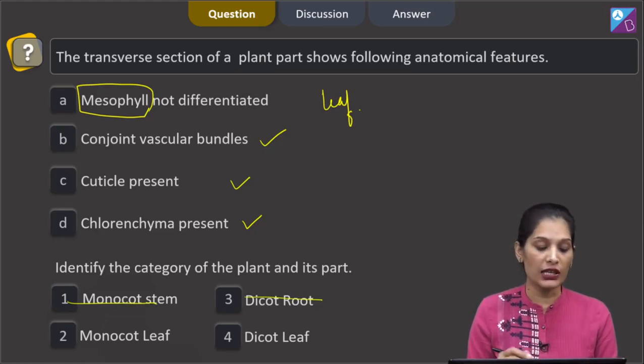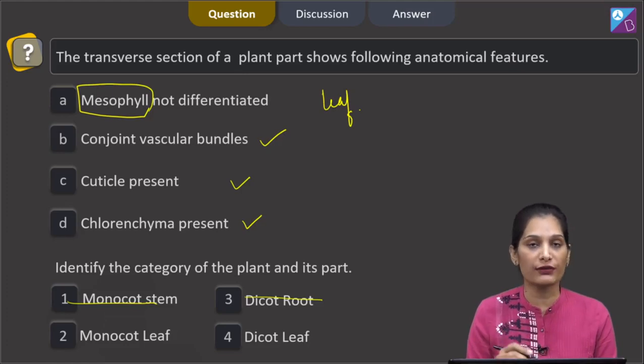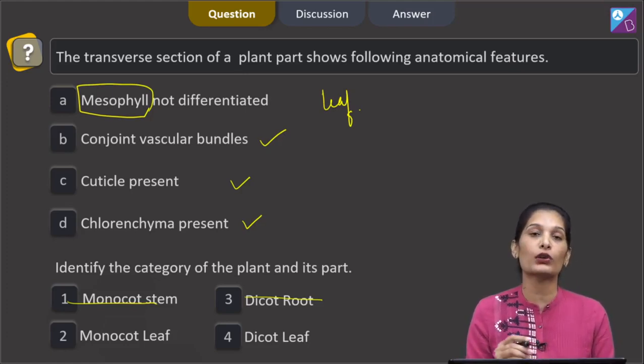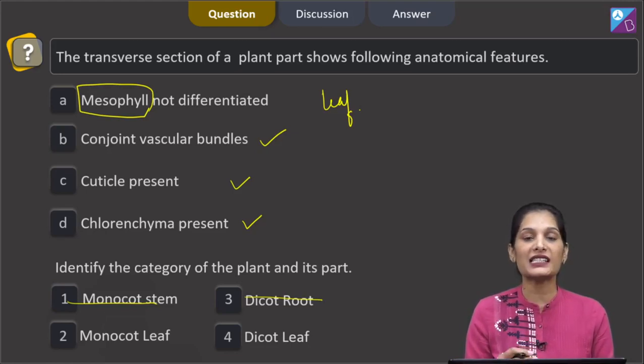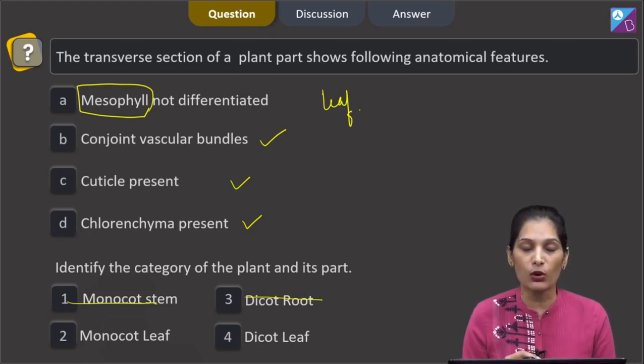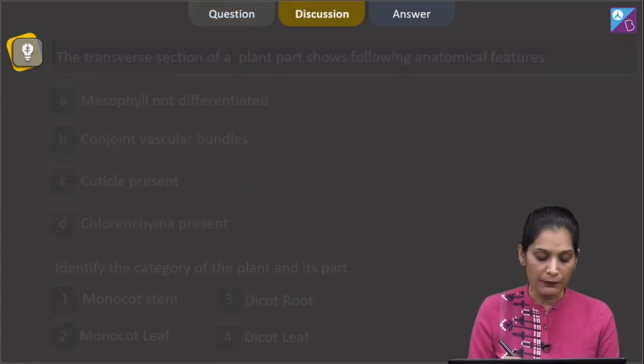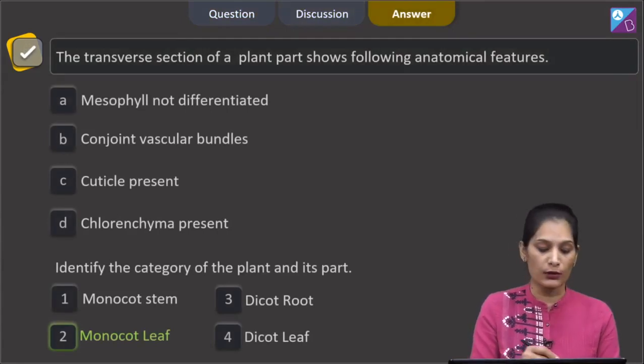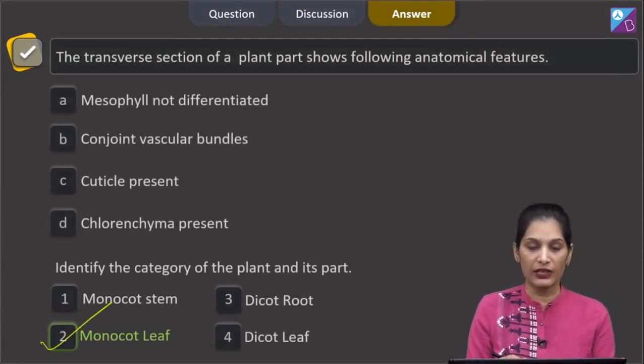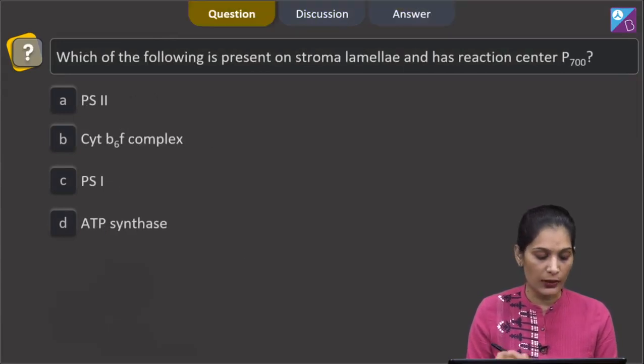Here it is mentioned the mesophyll is not differentiated which is a feature of monocot leaf. You will see the only mesophyll cells. If it would have been a dicot leaf then you can see the palisade and the spongy parenchyma over there because the mesophyll is differentiated in the dicot leaf. So we can say the correct option for the given question is option two that is monocot leaf.